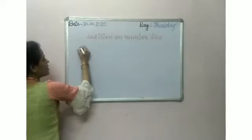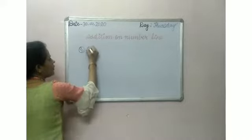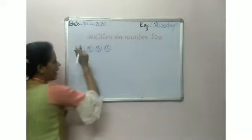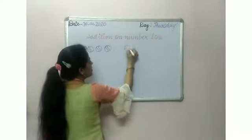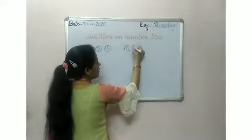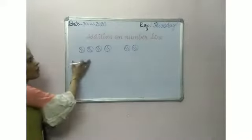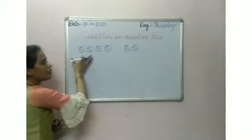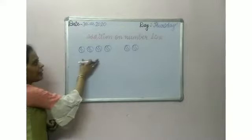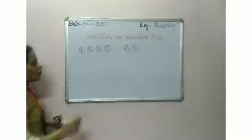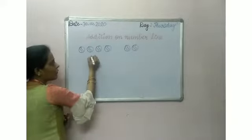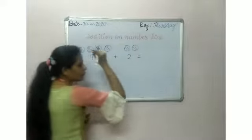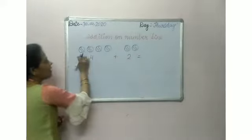I am having four bowls — one, two, three, four. And my friend is having two bowls. Now we are going to play together with all the bowls. Now you can tell how many bowls we have all together. Four plus two equal to — one, two, three, four, five, six.